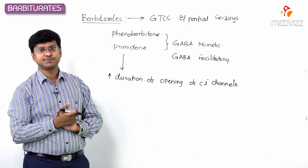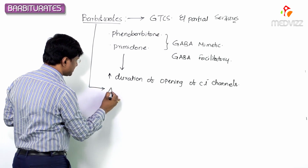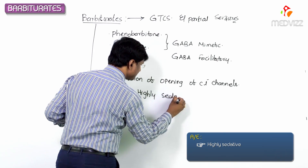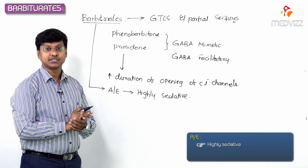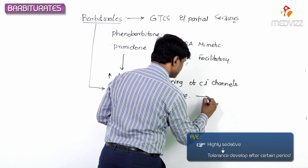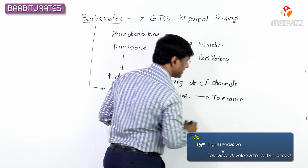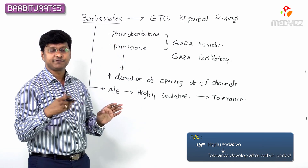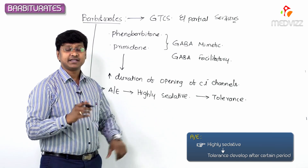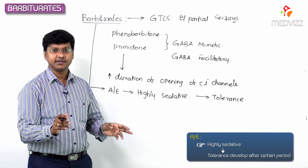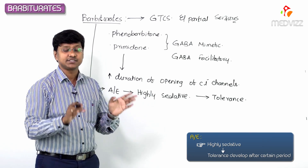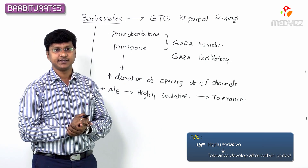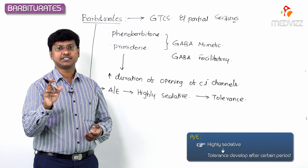The important adverse effects of these barbiturates are that they are highly sedative drugs. However, tolerance develops to this particular effect. Normally when an individual takes barbiturates once or twice, they will cause sedation. But if the individual keeps taking them repeatedly, they will develop tolerance to the sedative effect — meaning after a period of time there will be no sedation.